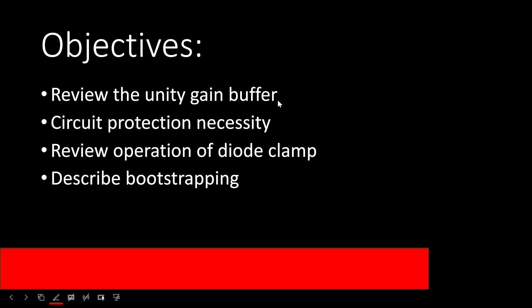We'll start by reviewing the operation of the Unity Gain Buffer. We'll talk about why circuit protection is necessary, with an emphasis on input protection. We'll explore diode clamps and then we'll describe bootstrapping, which is a method of reducing the diode capacitance.